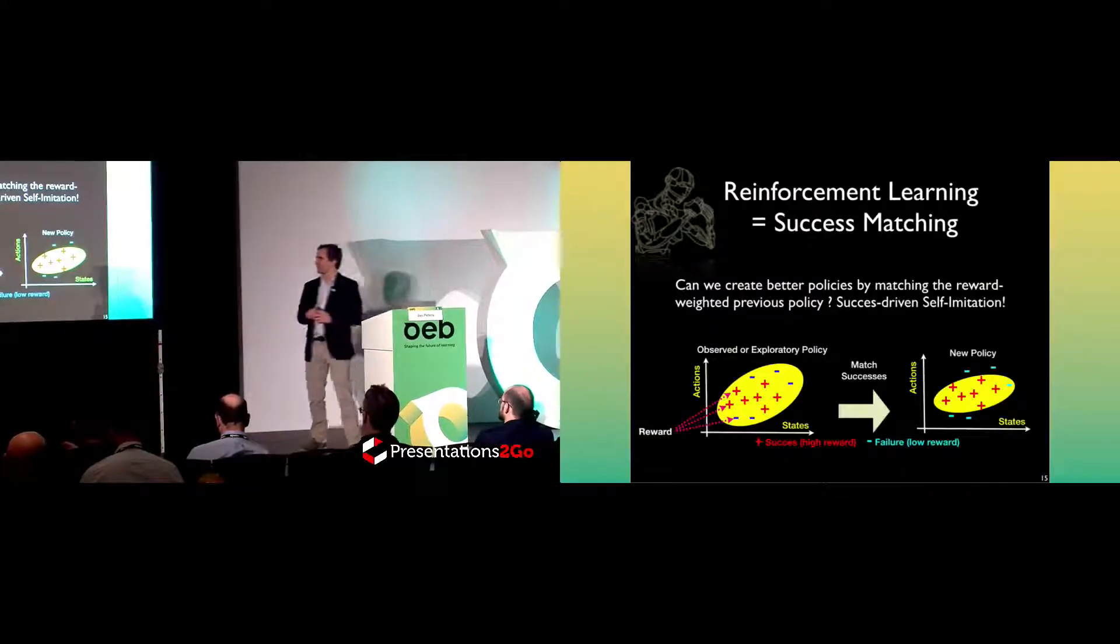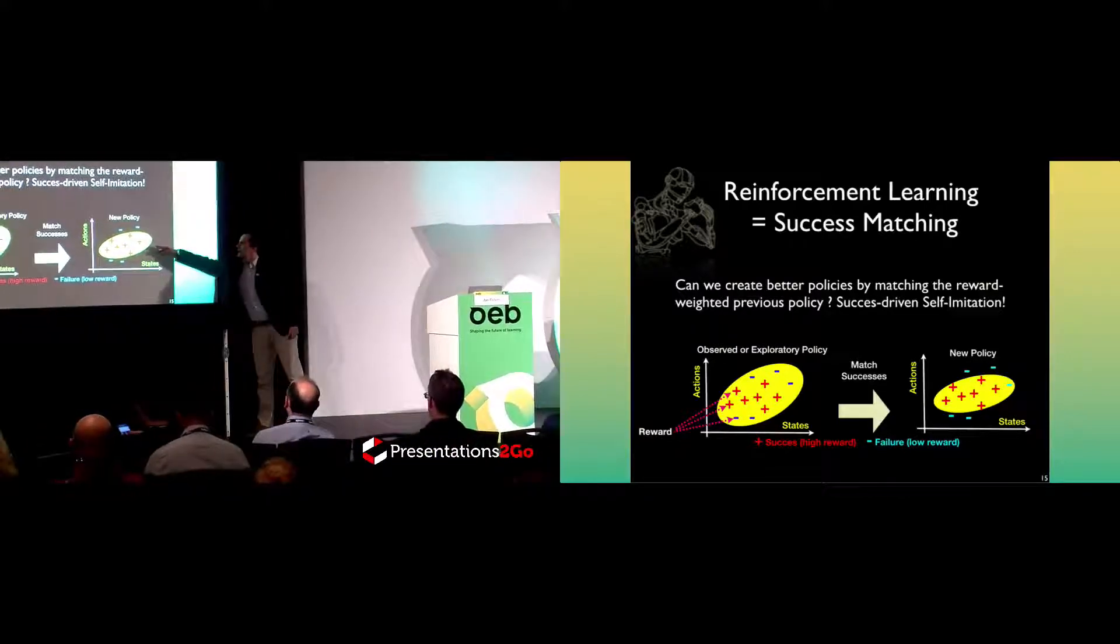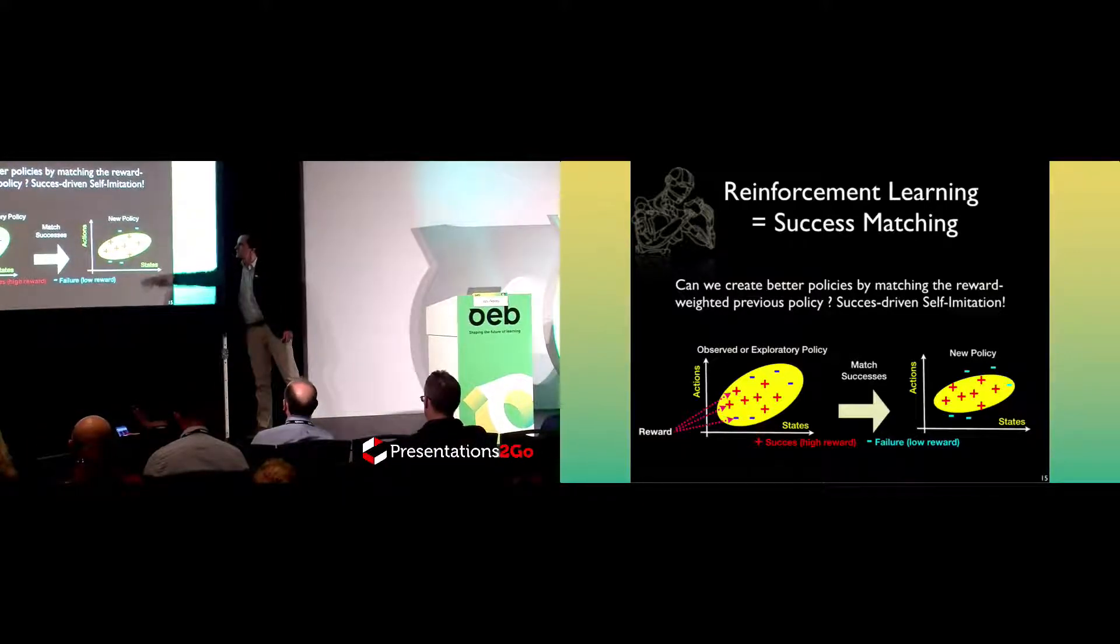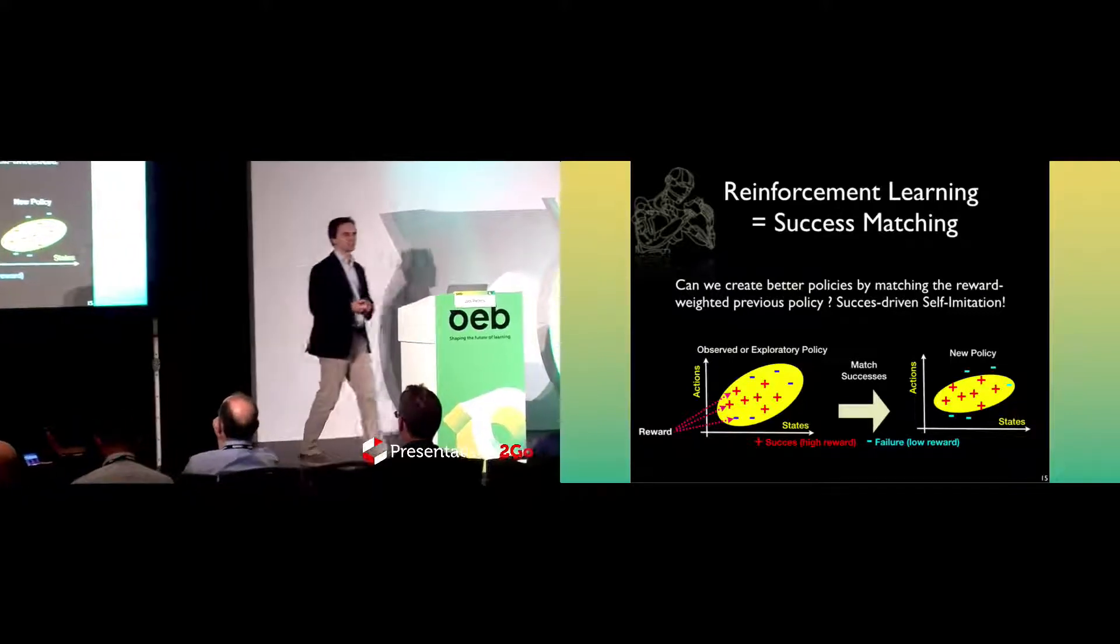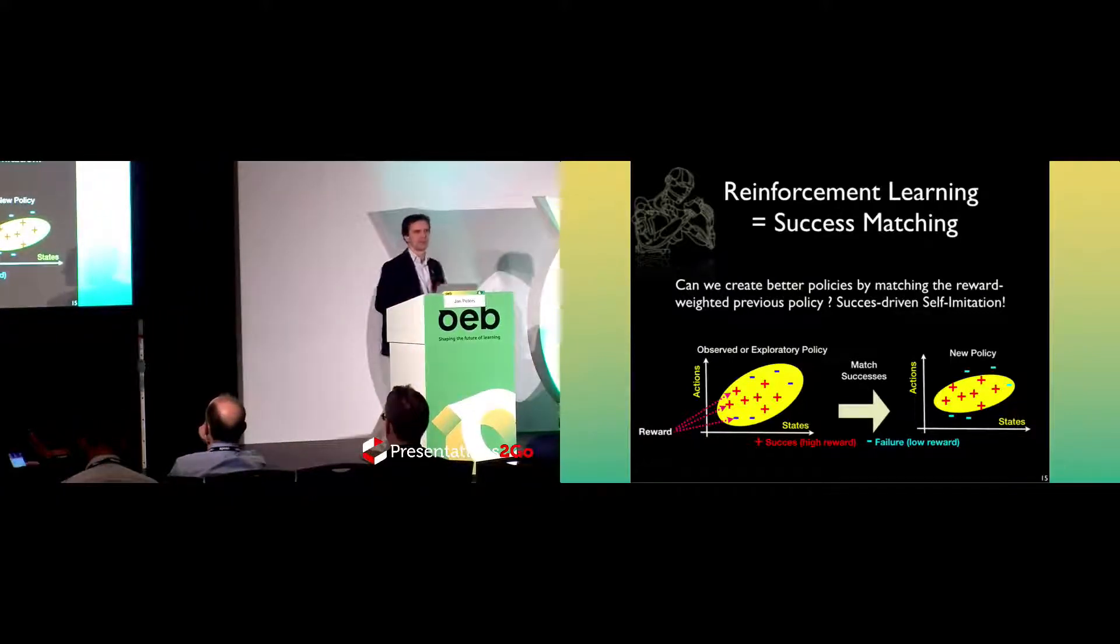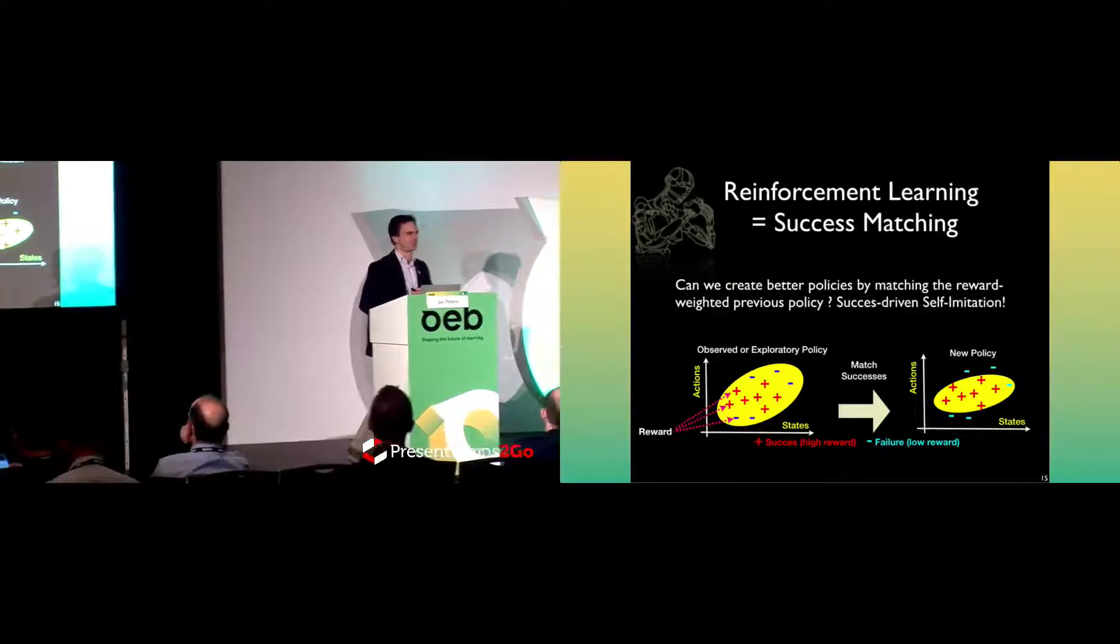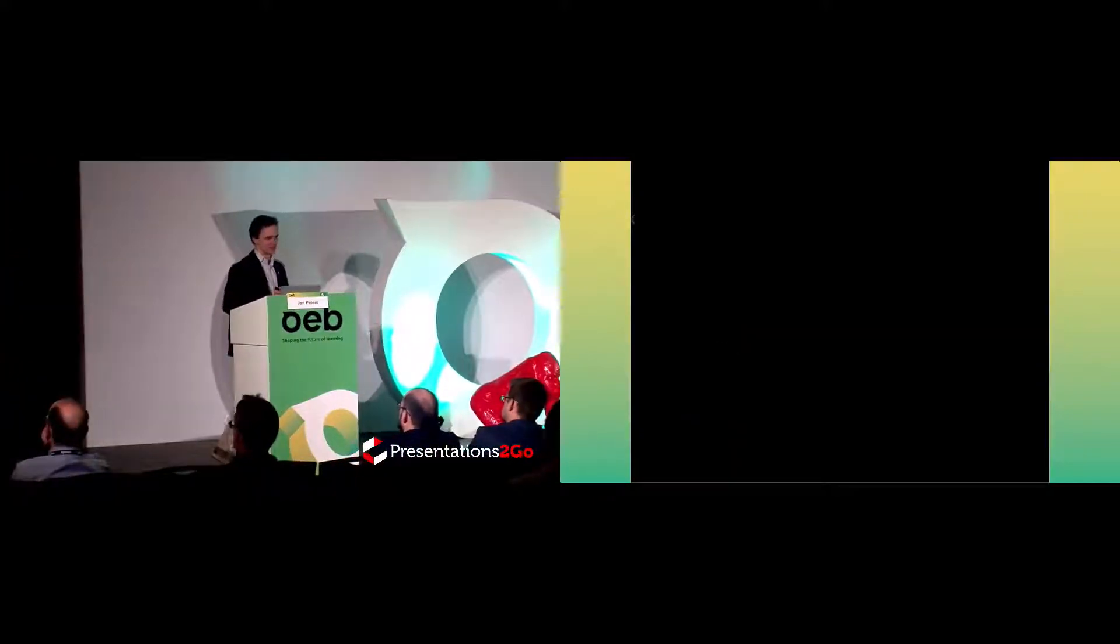It turns out that there is a very simple way of thinking about this, which comes from psychology, that you really should match your past policies, just reweighted by these rewards, so that you would reproduce all of the good actions. But if for one state, you only have bad actions, you rather reproduce this one, and you're a little bit conservative, instead of trying something crazily new. And surprisingly, this works quite well.